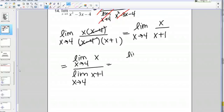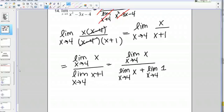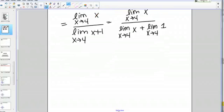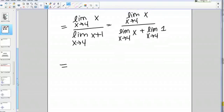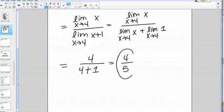Then, I can further split up the denominator and write as the limit as X goes to 4 of X plus the limit as X goes to 4 of 1. Now, I know that the limit as X goes to 4 of X is just 4, so 4 on top and then 4 plus, and the limit as X goes to 4 of 1, that's just a constant, so it just stays 1. And my final answer for this limit is 4 over 5.